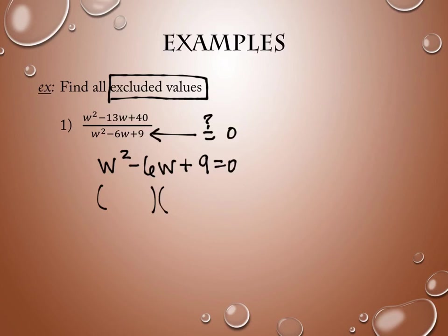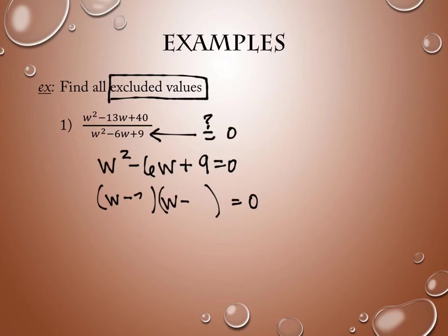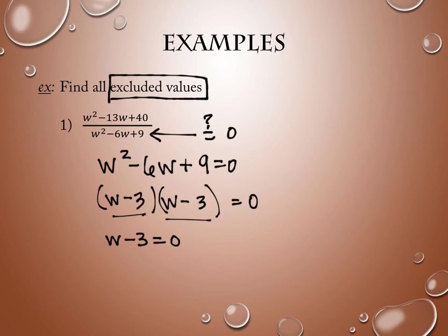We like values that factor, and this one does. Both negatives, because of the middle term and the last term. They're threes, and they happen to match. If they didn't match, we would set both factors equal to zero. But since they match, I only need to set one equal to zero. And what does w equal? Three. So this is the excluded value — w equals 3. I cannot allow three to be part of the values that work here, because I would get a zero in the denominator.